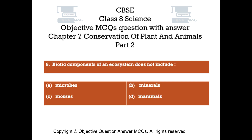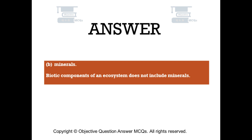Question number 8. Biotic components of an ecosystem does not include: Option A Microbes, Option B Minerals, Option C Mosses, Option D Mammals. The right answer is Option B — Minerals. Biotic components of an ecosystem does not include minerals.